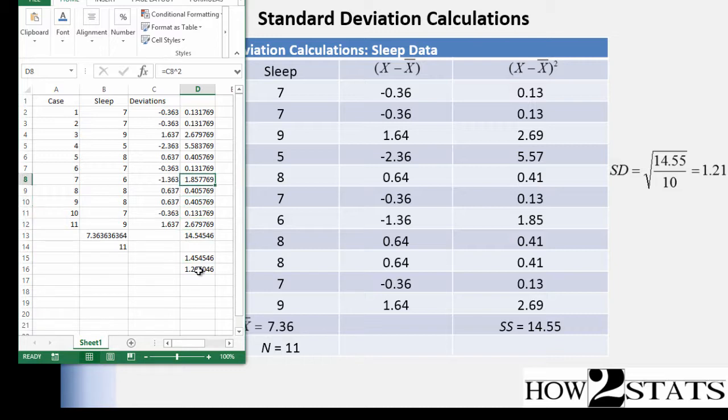So these are the steps involved with doing the calculations the long way in such a way that you get all the values, the mean, the sample size, the deviations, the squared deviations, and then the sum of squares right here, 14.54. And then we divide that by n minus 1. And then we square root that value and we get the standard deviation.